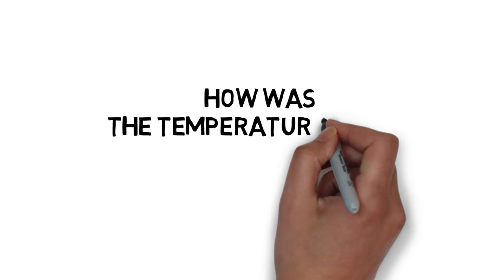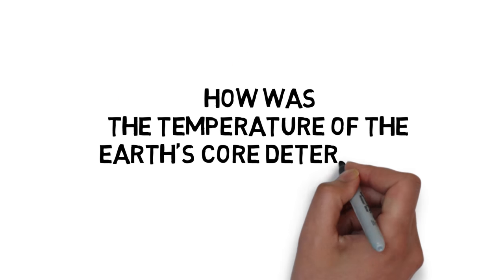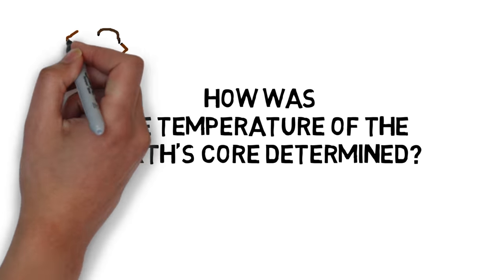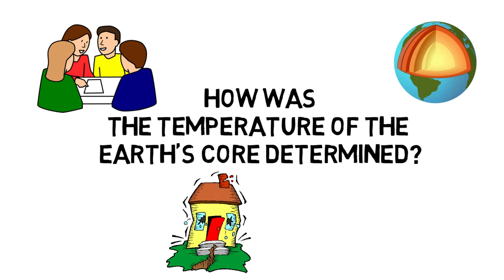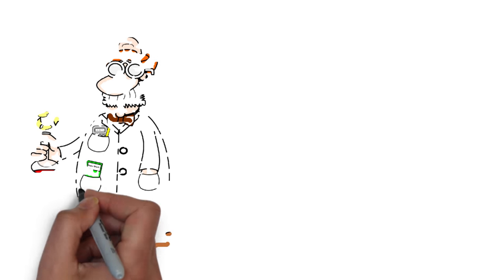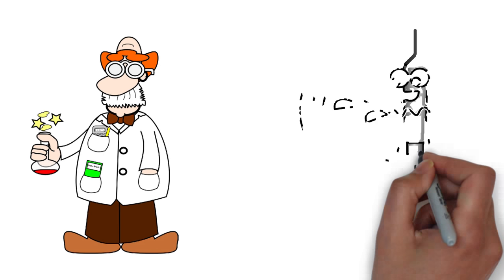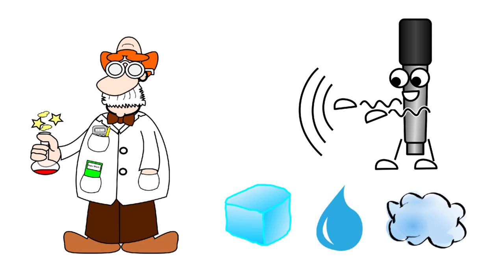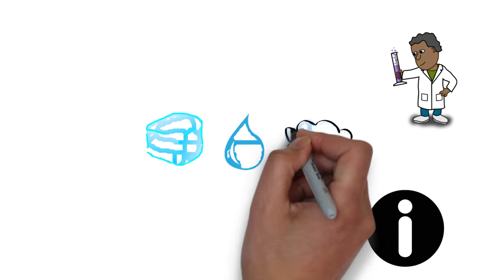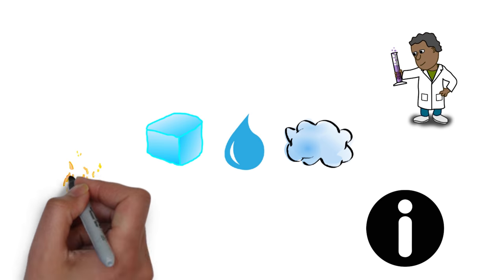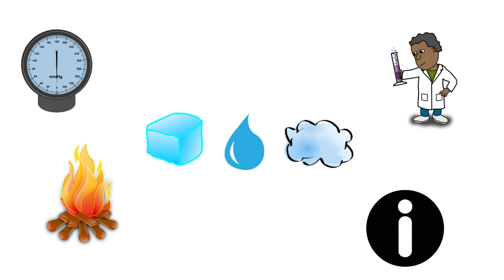How was the temperature of the Earth's core determined? One of the main ways we learned about Earth's interior is by studying earthquakes. Scientists have learned a lot about how vibrations travel through different types of materials. Then they take information from other scientists on how those materials behave under heat and pressure.